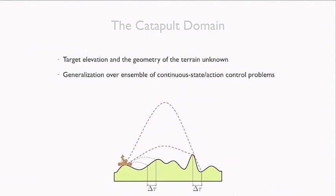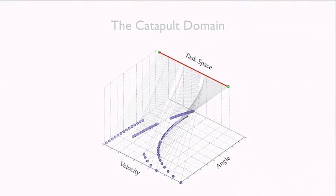We evaluated this algorithm on the catapult domain, which looks easy but is actually pretty challenging. You have a catapult that needs to learn a skill for hitting enemies placed anywhere on a crazy terrain. The catch is the catapult doesn't know the target elevation, the height of the enemies, or the geometry of the terrain — it's like a blind catapult. Even so, it wants to become competent at hitting any possible enemy, representing an infinite family of continuous-state, continuous-action, partially observable control problems.